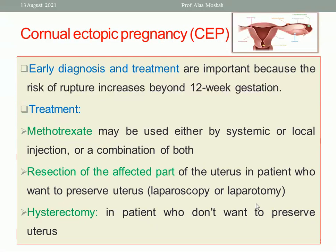Early diagnosis and treatment is critical because risk of rupture increases beyond 12 weeks, potentially causing severe internal hemorrhage, shock, and death. Treatment options include methotrexate — systemic or local injection, or combination — if the patient is stable and diagnosed early. Surgical options include resection of the affected part of the uterus by laparoscopy or laparotomy for those who want to preserve the uterus, or hysterectomy for those who do not.